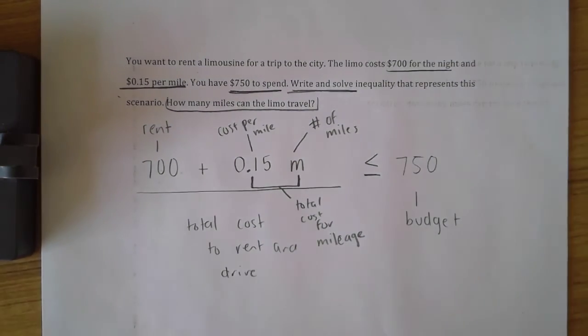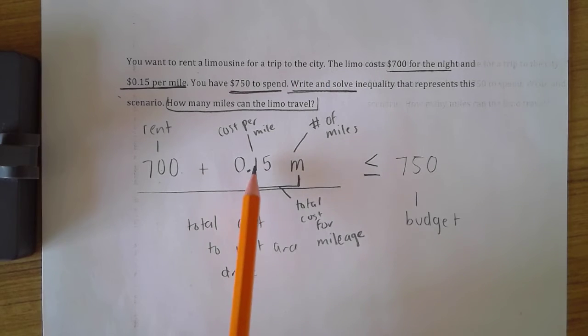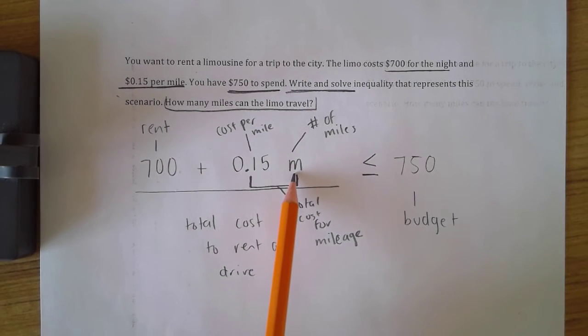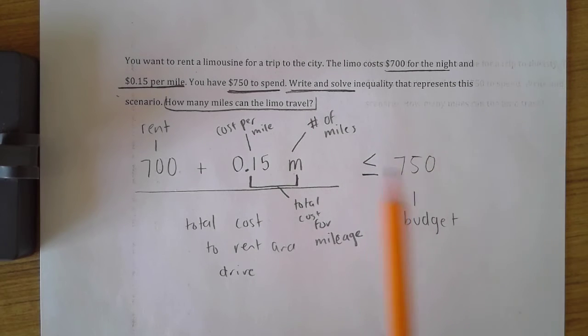Before I even try to solve, which is what I'm trying to get you guys to avoid, I need to make sure that my inequality makes sense. If I rent this limousine for $700 and it costs 15 cents per mile, can I go over the 750? I can't. So it must be at most $750.